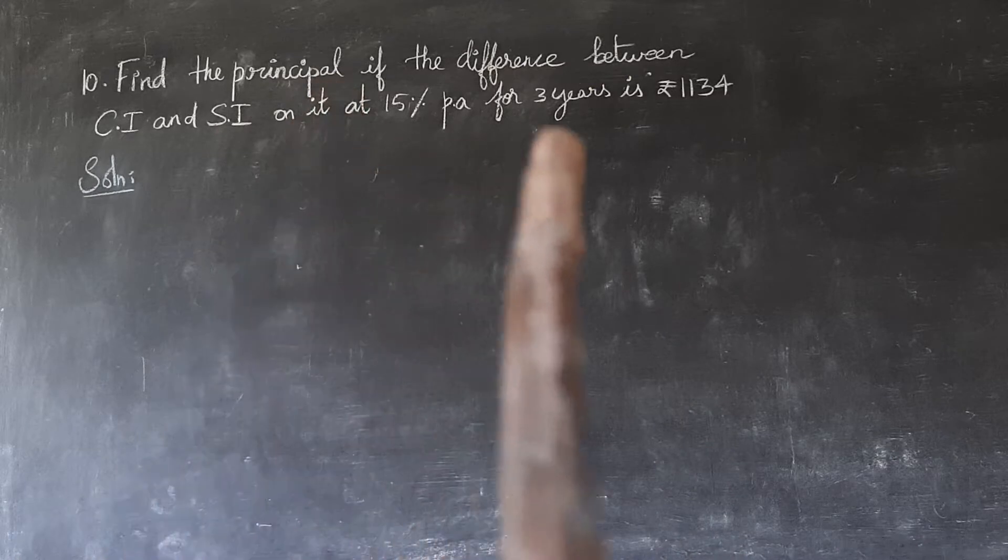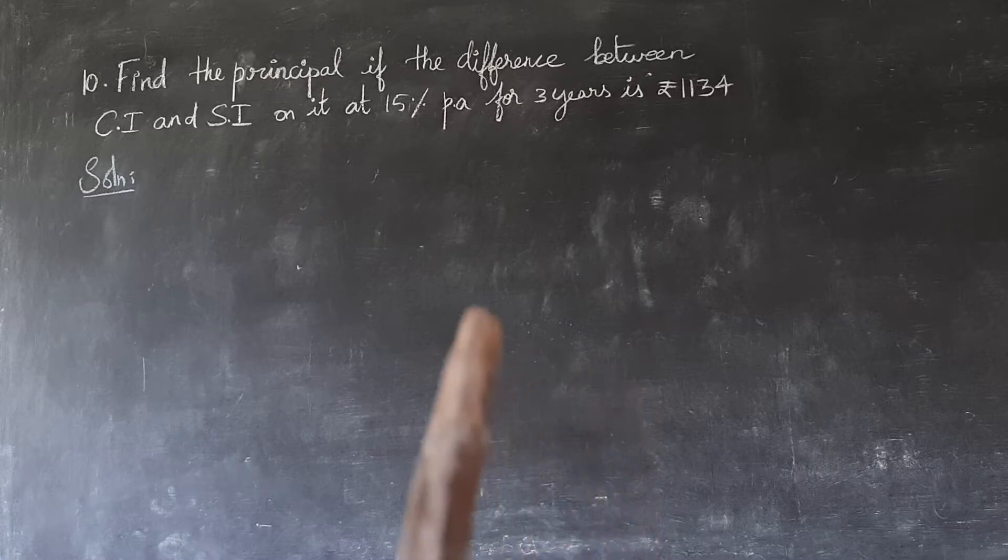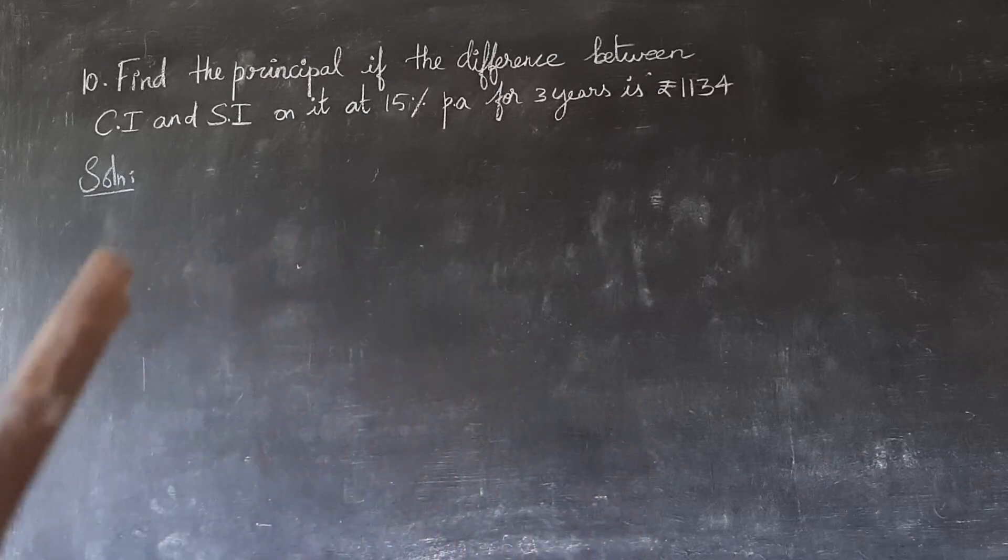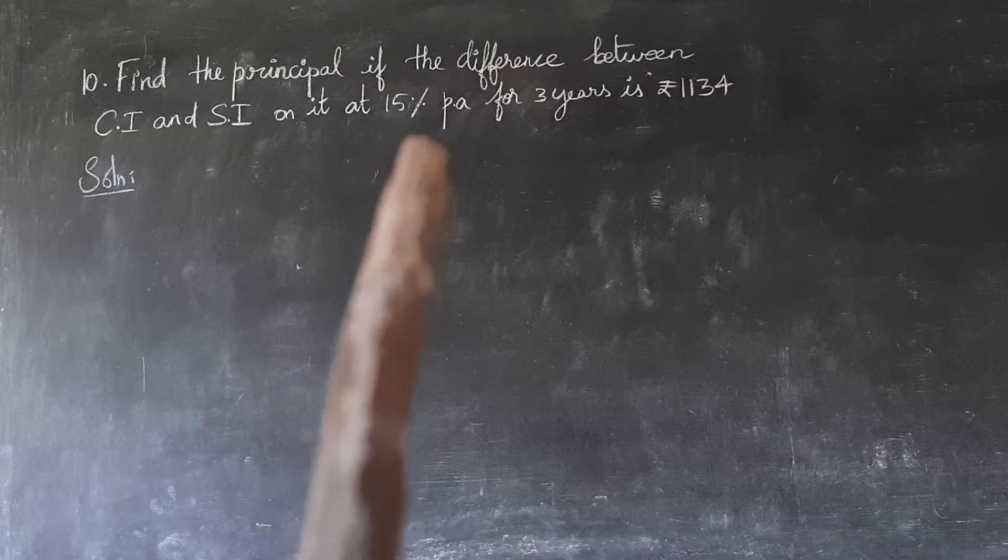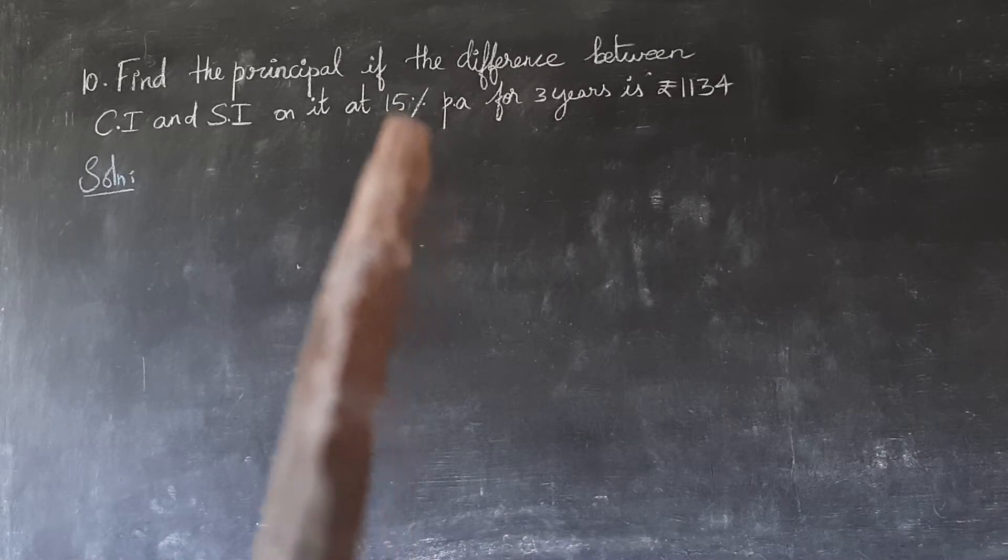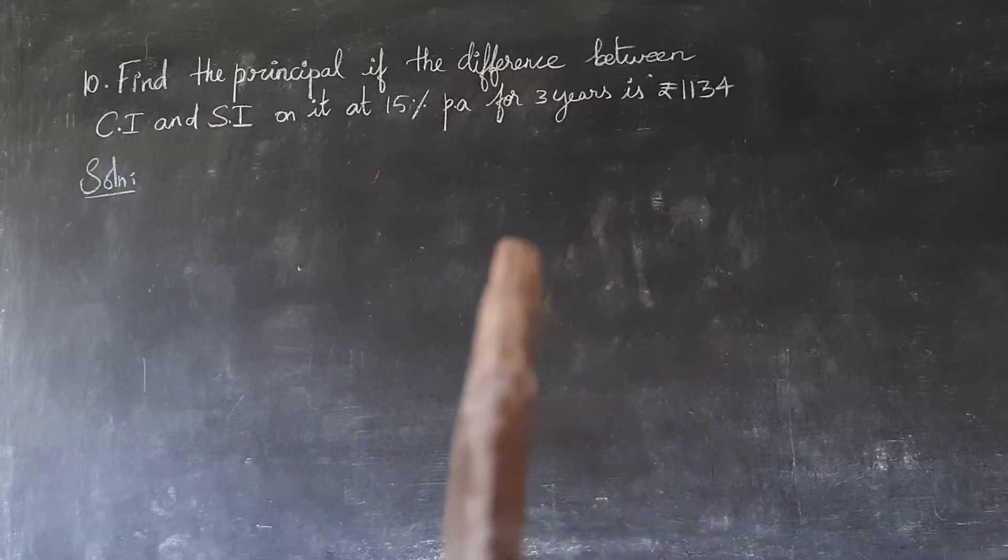Okay, here they've given 3 years. For 3 years, we have a different formula. They're giving us the difference and 15% rate of interest. We have to find the principal of the amount.